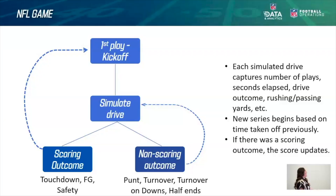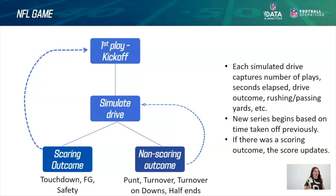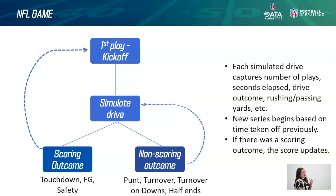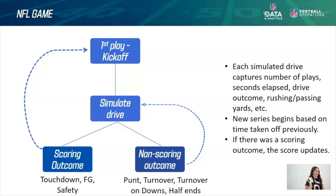I'm going to walk through the method of how we built this game simulation model from the top down. When you simulate an NFL game, you start with the first play being the kickoff. The R code runs simulate drive, which can end with two outcomes: a scoring outcome or a non-scoring outcome. Each simulated drive captures various information. Scoring outcomes change how points are added and how time comes off the clock, and then we move back to the next possession. If it's a non-scoring turnover, the next team begins iterating on the next simulated drive.